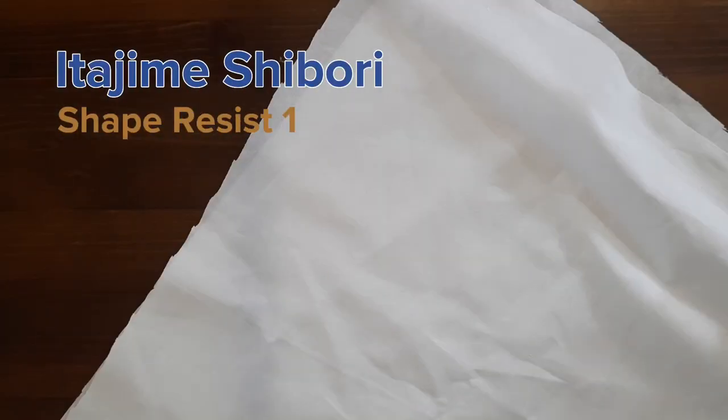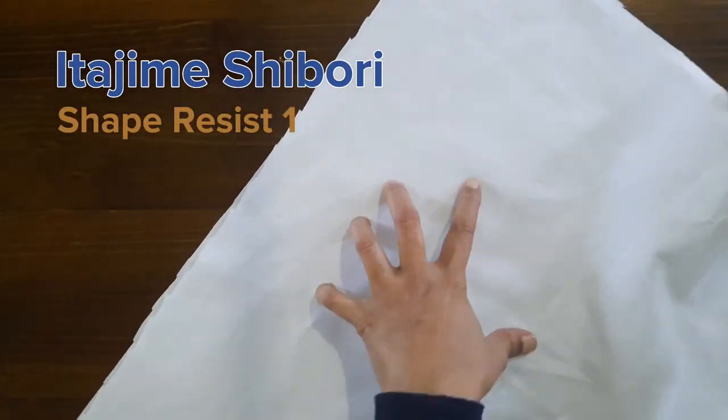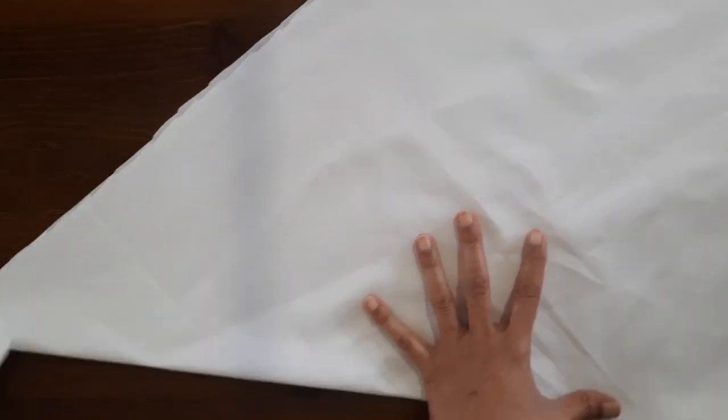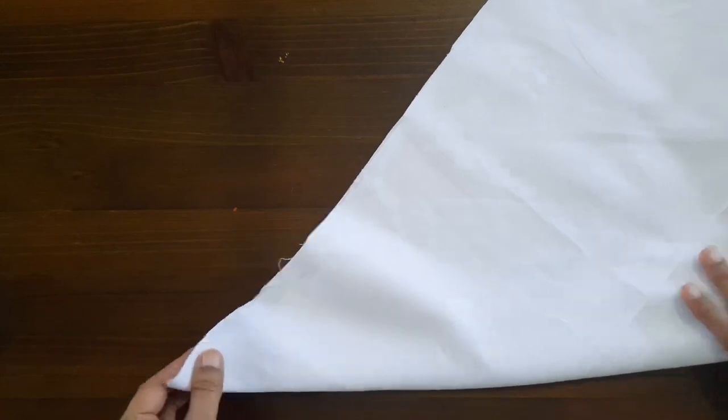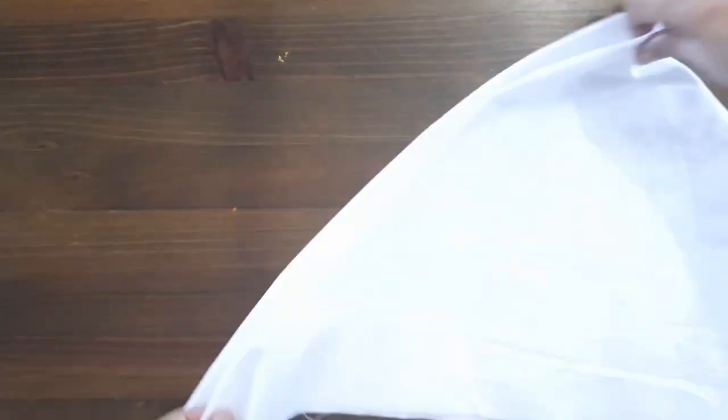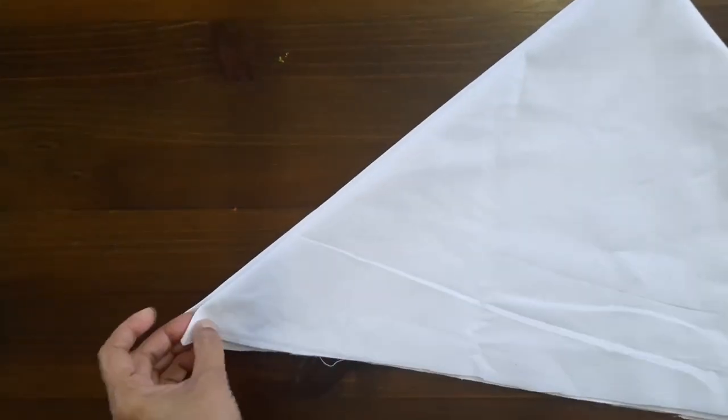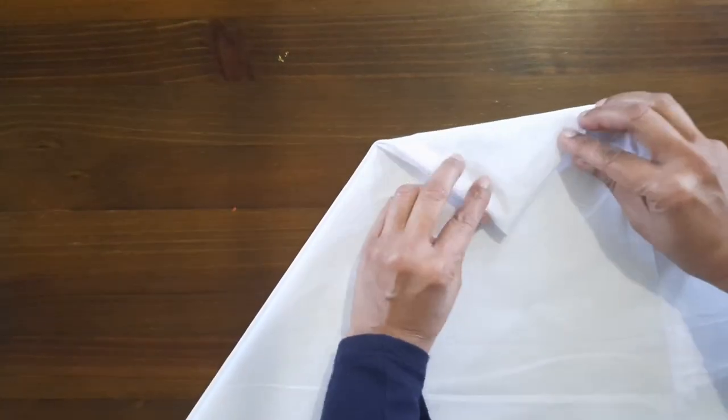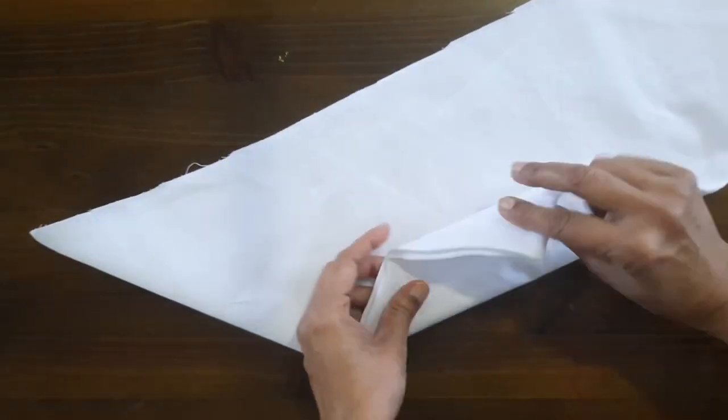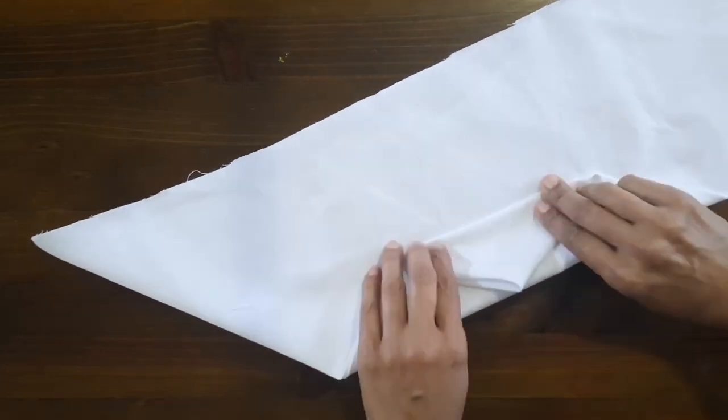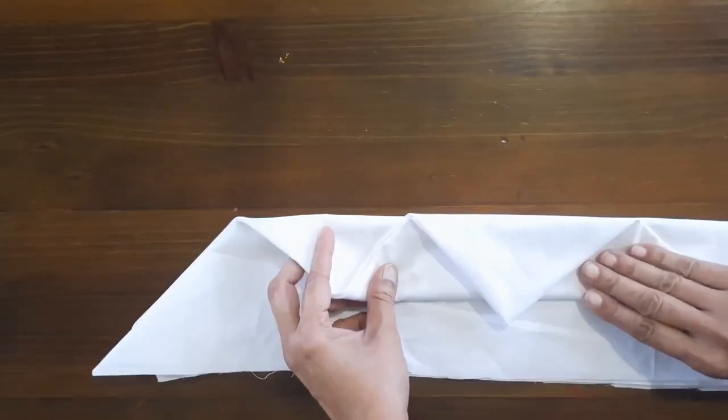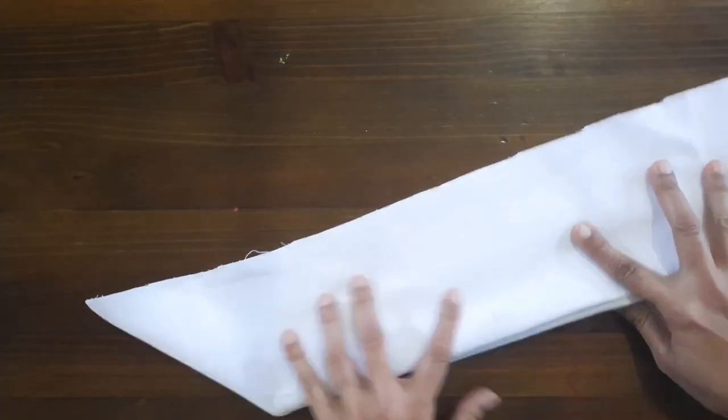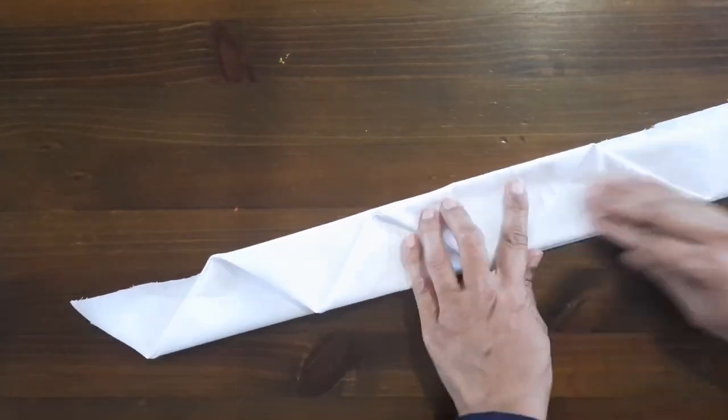The next technique is the itajami shibori. This is the shape resist technique. The basic principle in this shibori, or in fact in all the shibori, is the folding. Whenever you're folding the fabric it must be like a fan folding or accordion fold. That would increase your possibility of dye getting to all the layers.